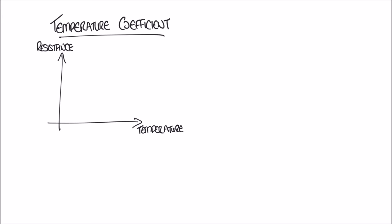We start not at zero but at a reference temperature, which is normally around room temperature — about 20 degrees. What we see in most resistive substances is that resistance at room temperature actually increases as temperature increases. So if a substance is 10 ohms at room temperature, as temperature increases, resistance increases quite linearly, and at a higher temperature we have a higher resistance.